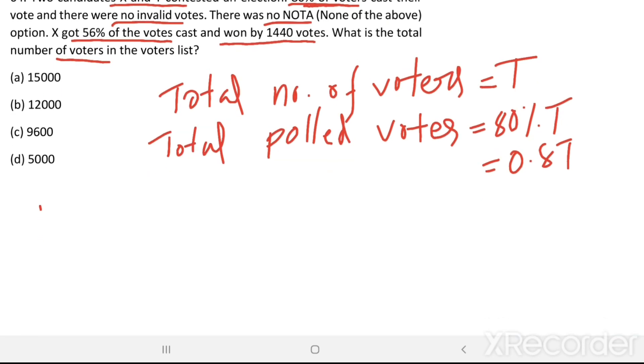Then, X got 56% of total polled votes. That is 56% of 0.80T.